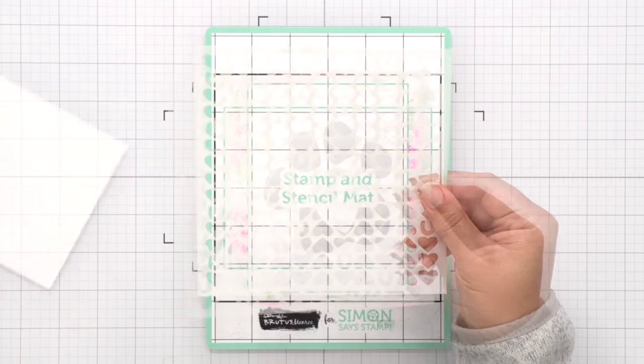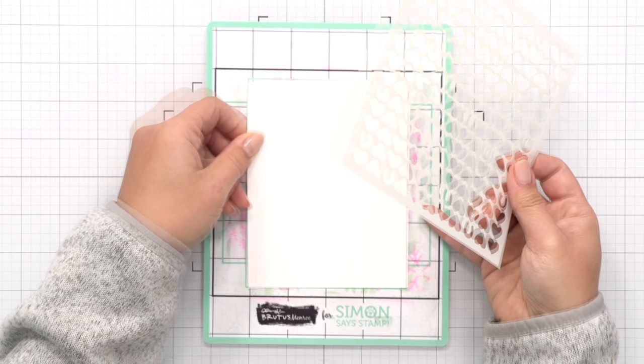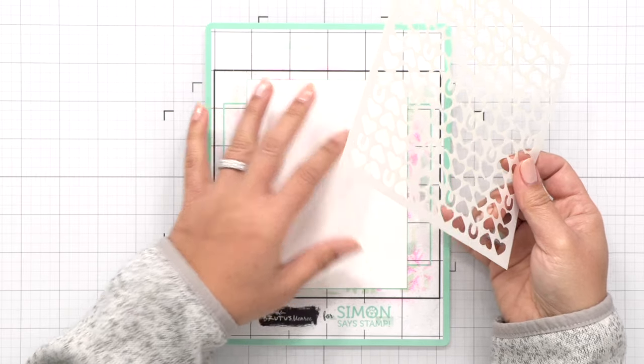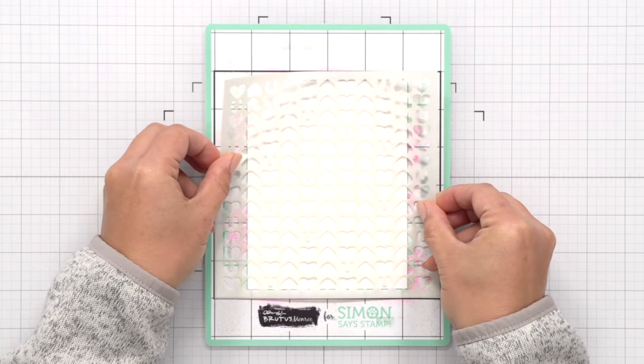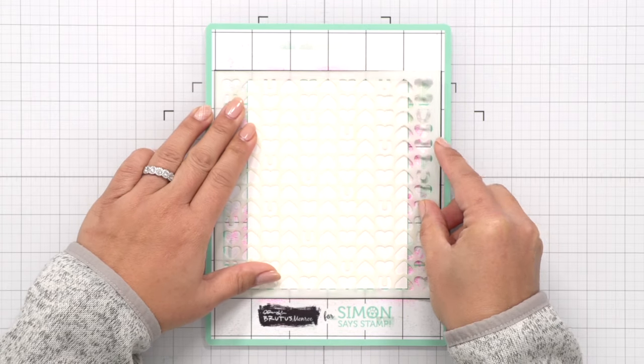The first thing I'm going to do is I'm going to stencil this Pony Love stencil onto a background because I'm going to be using a paste. I want to make sure there's plenty of time for it to dry while I'm coloring that Lucky horseshoe image.